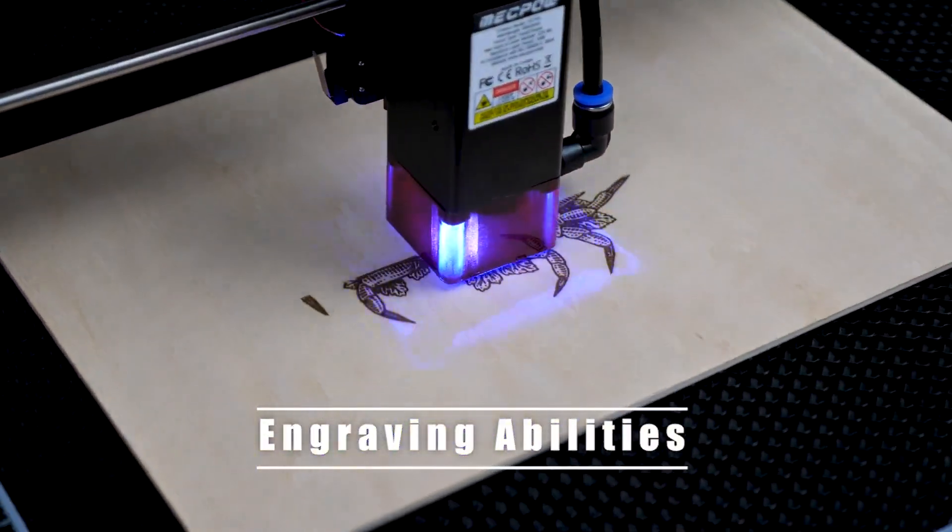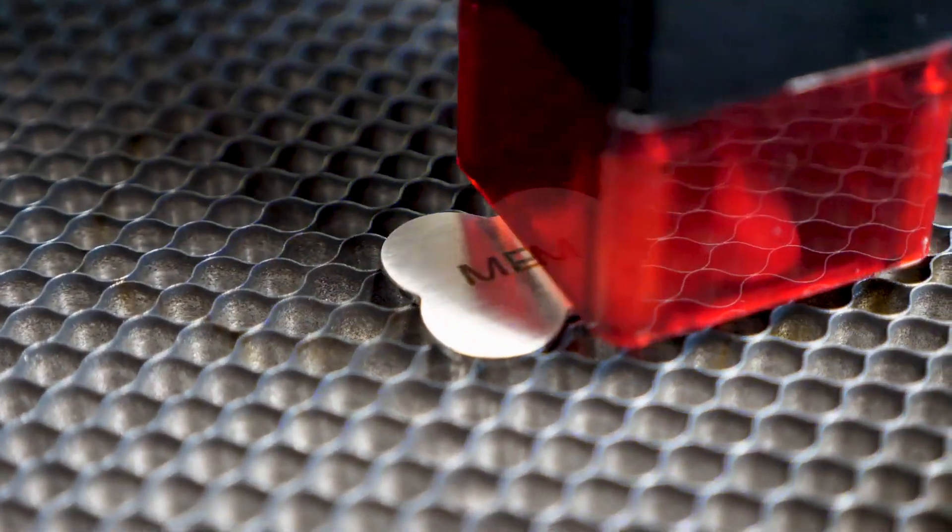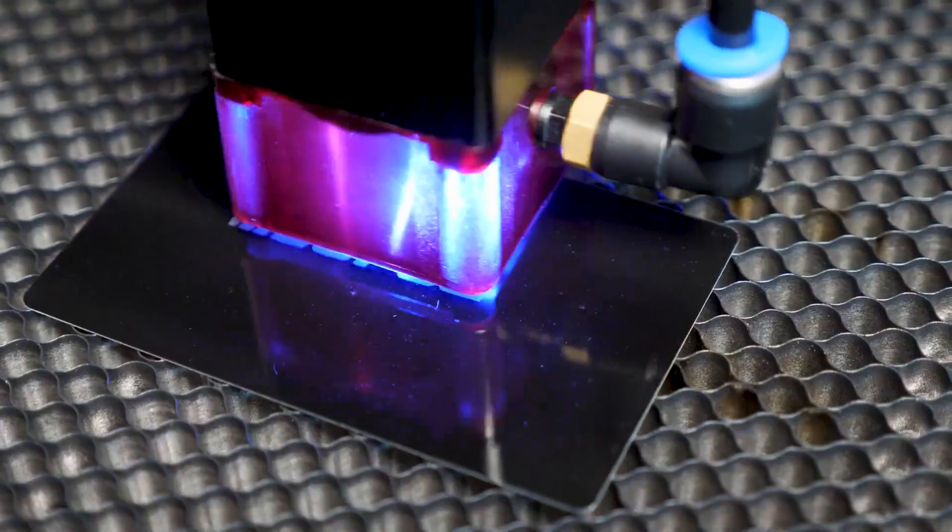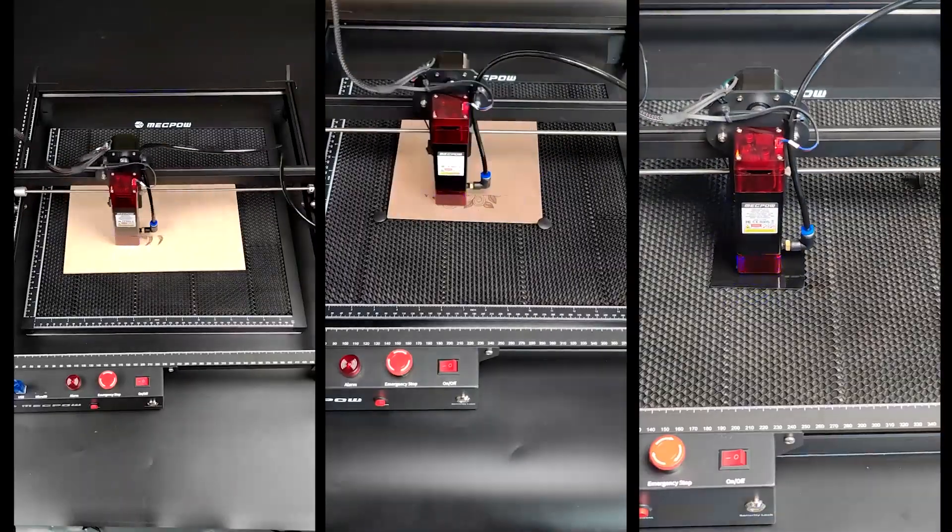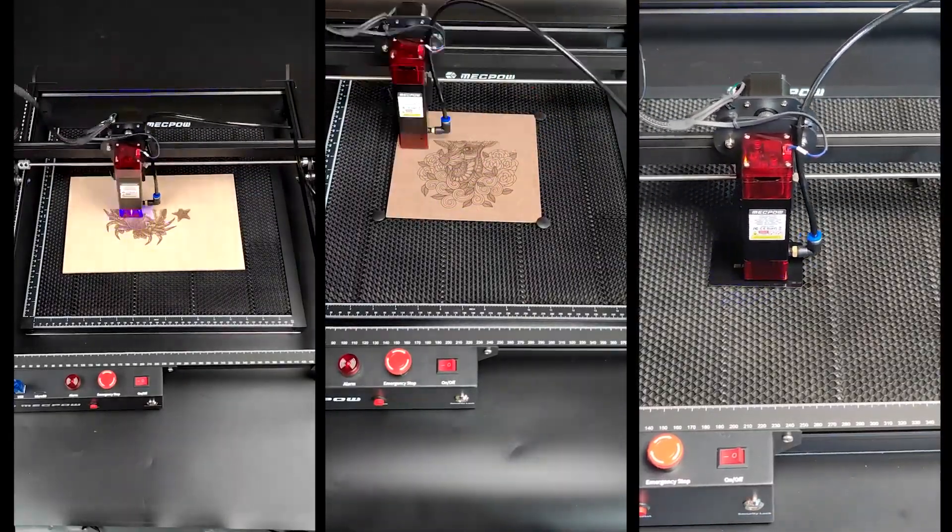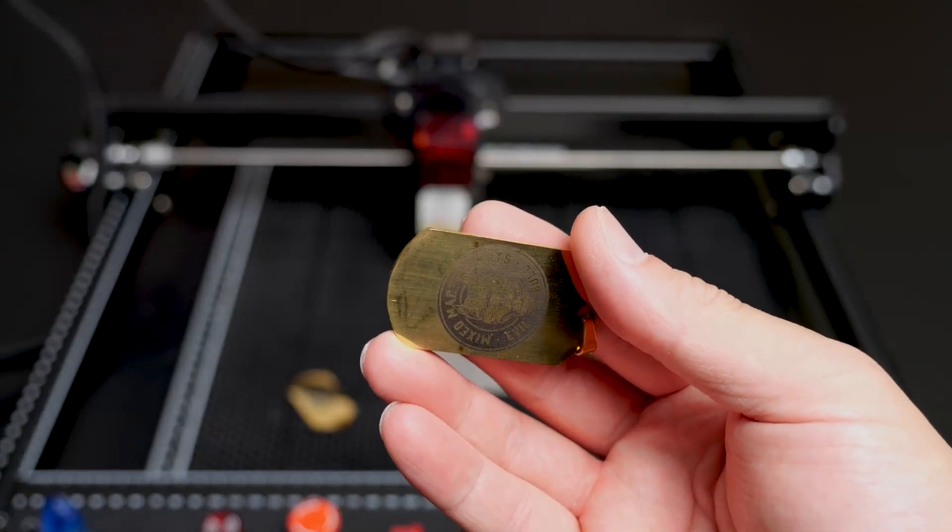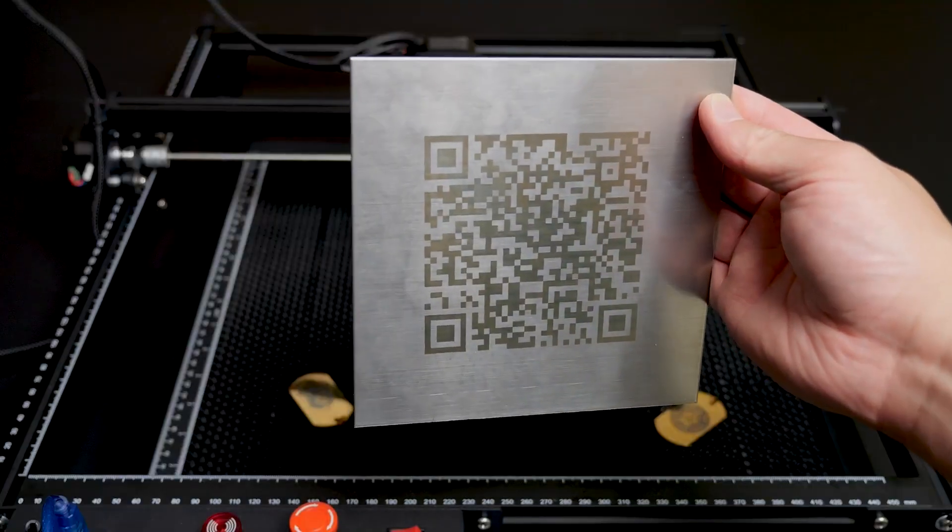Now let's talk about the engraving ability of the Meg Powell X3 Pro. For those who wonder about the materials it can handle, it features a 450nm laser, also known as a diode laser. It works best on wood, medium-density fiberboard, various painted metals, and even 304 stainless steel, among others.